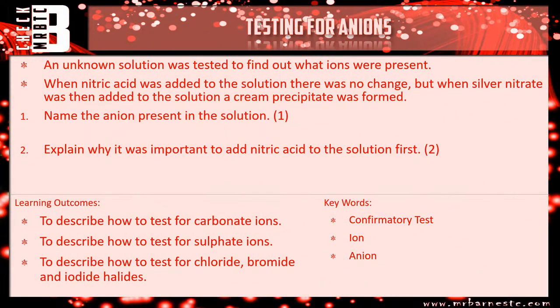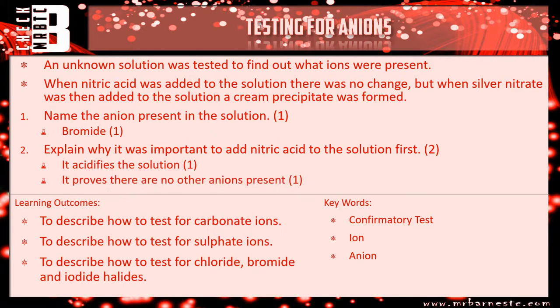Okay let's go through. When you add nitric acid and then silver nitrate, if it goes cream you know it's a halide. The cream precipitate means it's a bromide ion. Then, explain why it's important to add nitric acid first: adding any acid first acidifies it so you know the reaction is going to take place, and it also makes sure there are no other ions present — for example carbonate ions.